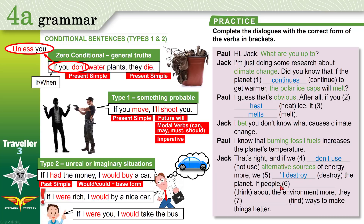'If people think about the environment more, they find ways to make things better.' Which situation is this? This is an imaginary situation — we are just imagining. Past simple: 'thought' is the past of 'think.' If people thought about the environment more, they would find ways to make things better.